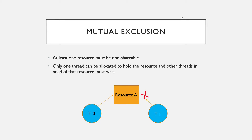Mutual exclusion is a condition in which at least one resource must be non-shareable. That means a resource, or an instance of a resource, should be non-shareable with more than one thread or process. Consider this example with two threads T0 and T1 and a resource A. When T0 is holding or utilizing Resource A, it cannot be simultaneously assigned to T1.